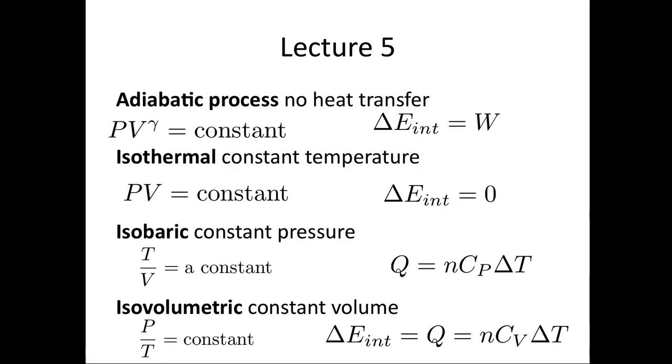OK, in lecture 5, we looked at different types of processes. An adiabatic process is one in which no heat is transferred. If we do a process very quickly, then there's no time for the heat to be transferred, and so this would be adiabatic. We derived the equation PV^γ is constant, where γ equals CP/CV. The change in internal energy in this case is just equal to the work done, as there is no heat transfer.